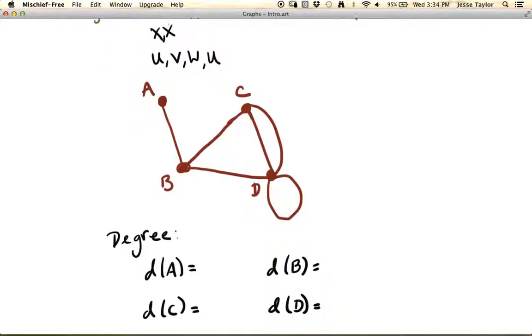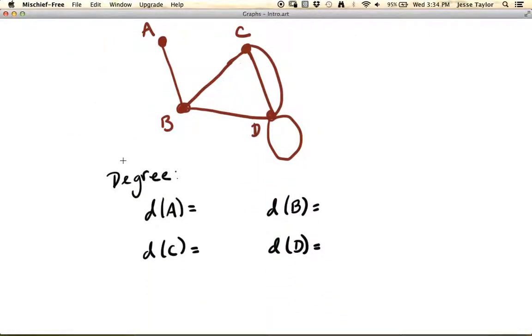The last thing I want to touch on is the idea of degree, and the degree of a vertex is the number of edges that meet at that vertex. So, for example, the degree of A is going to be 1, because there's only a single edge at A. And the degree of B will be 1, 2, 3. Three edges meet at B.